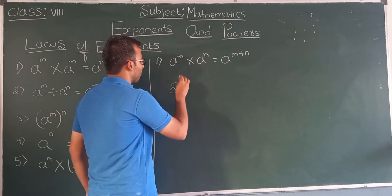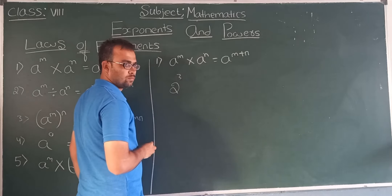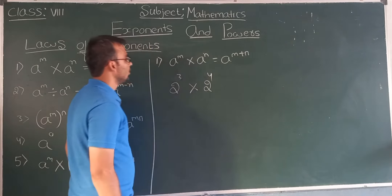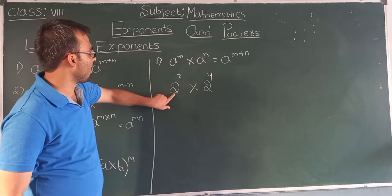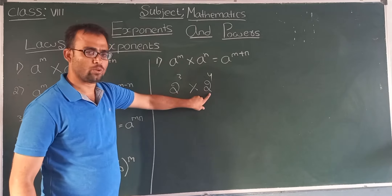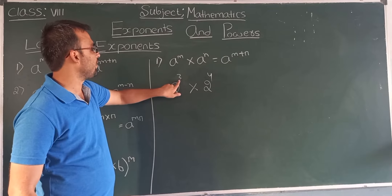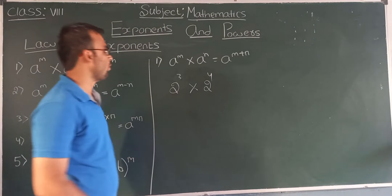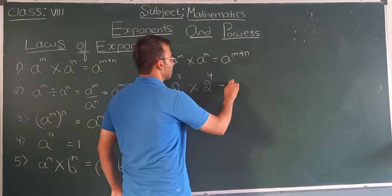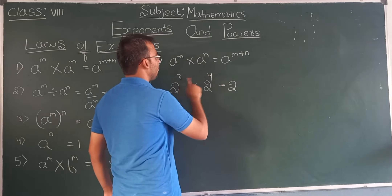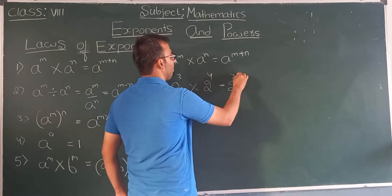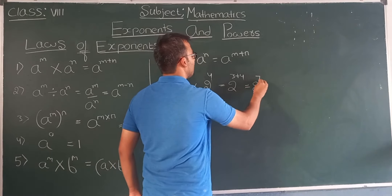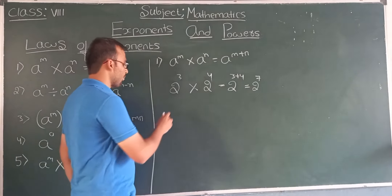For example, suppose 2 to the power 3 multiplied by 2 to the power 4. Look here — the base is the same, which is 2 in both. The powers are different: here 3 and here 4. So whenever you come across such things, you need to keep the base as it is.